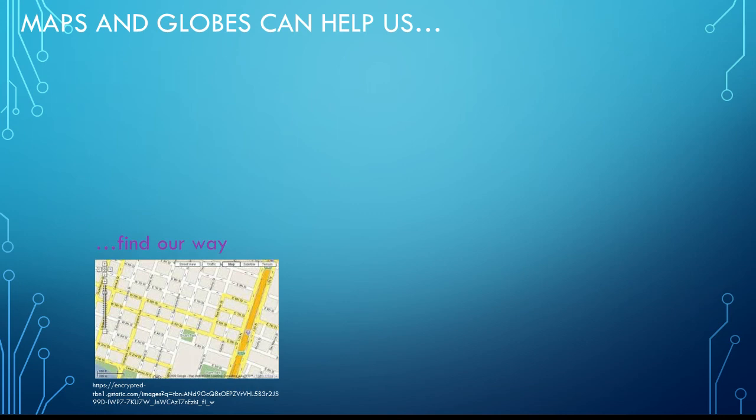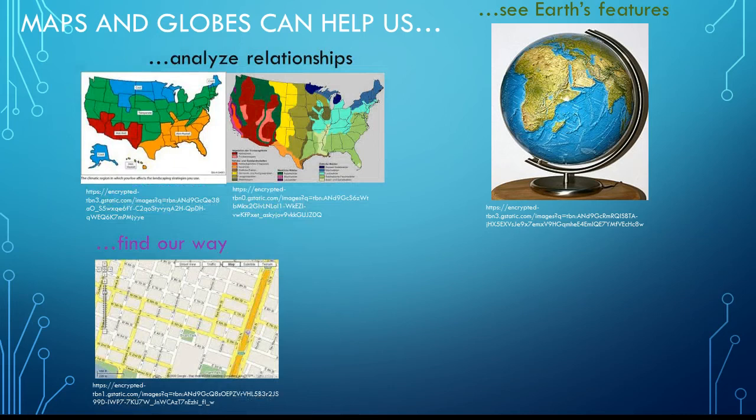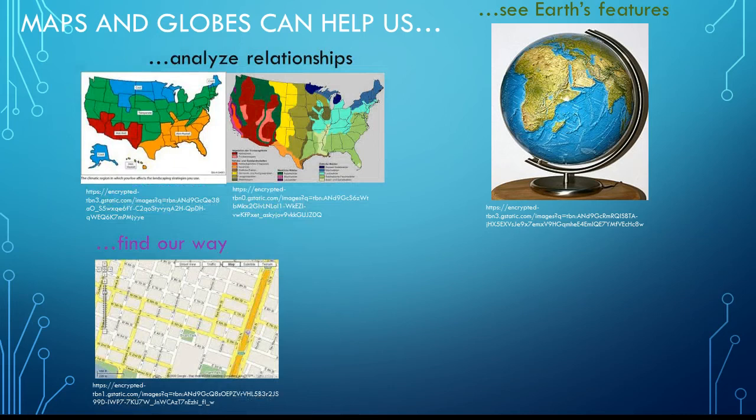Maps and globes help us a lot. They can help us find our way. They can show Earth's features and help us analyze relationships, like these two maps that show the climate regions of the United States and the vegetation regions of the United States, and help us think about how they might be related.